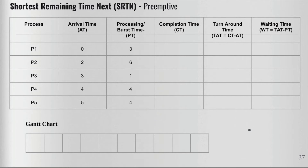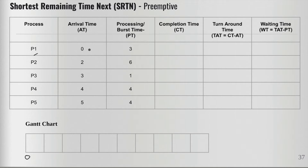In the Gantt chart, we start at time interval zero and check which processes have arrived. P1 has arrived at time zero — no other processes have arrived yet. So we move P1 from the ready state to the running state and begin its execution. Since it has a processing time of three, we won't run it for three full units, because this is a preemptive algorithm.